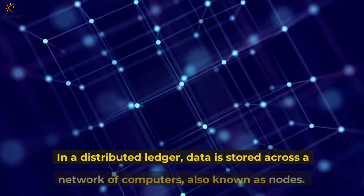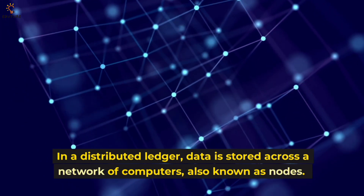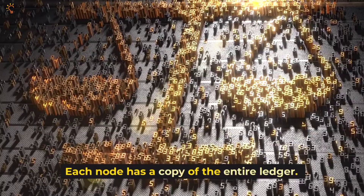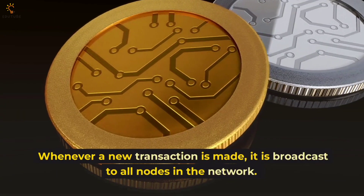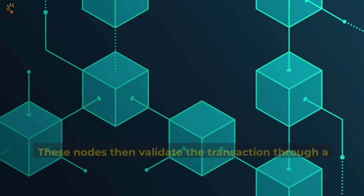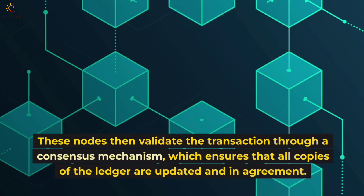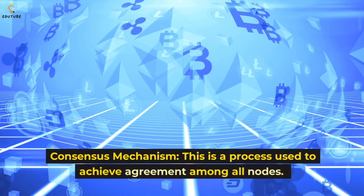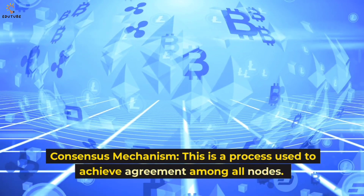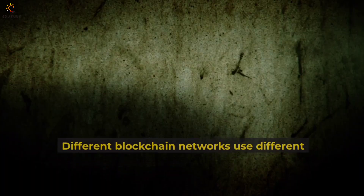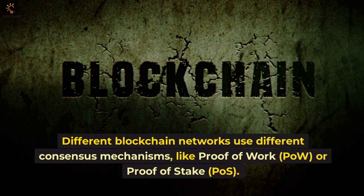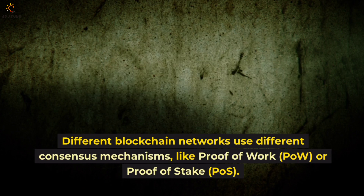How does DLT work? In a distributed ledger, data is stored across a network of computers, also known as nodes. Each node has a copy of the entire ledger. Whenever a new transaction is made, it is broadcast to all nodes in the network. These nodes then validate the transaction through a consensus mechanism, which ensures that all copies of the ledger are updated and in agreement. Different blockchain networks use different consensus mechanisms like proof-of-work (POW) or proof-of-stake (POS).